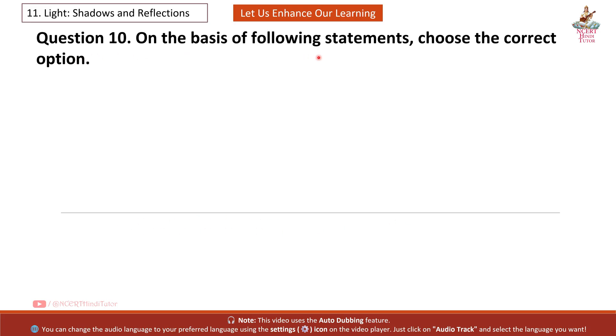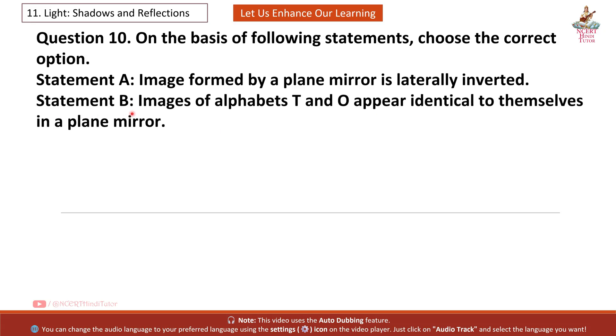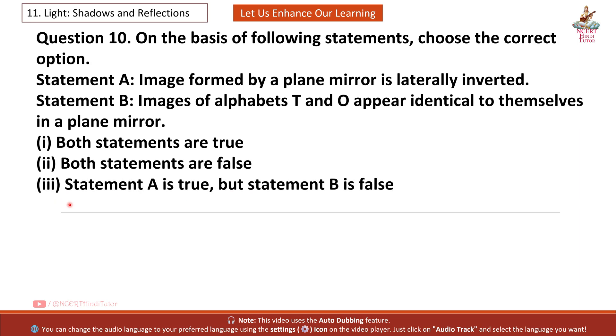Question 10: On the basis of following statements, choose the correct option. Statement A: Image formed by a plain mirror is literally inverted. Statement B: Images of alphabets T and O appear identical to themselves in a plain mirror. First, both statements are true. Second, both statements are false. Third, statement A is true, but statement B is false. Fourth, statement A is false, but statement B is true.